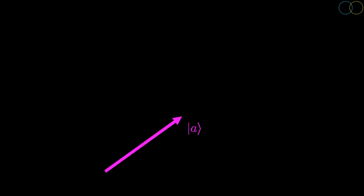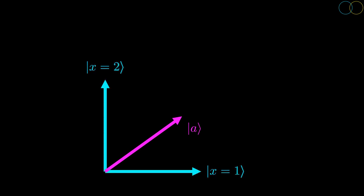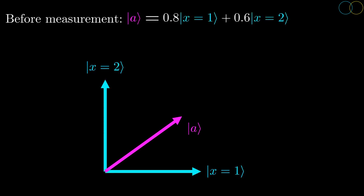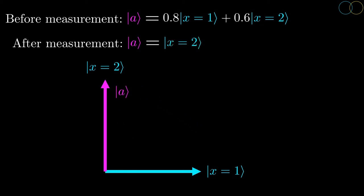Not only are the eigenvectors the only measurable states, but when we measure, the state changes to be the eigenvector measured. So by measuring a property of the system, we actually change the system. This is what's being referred to when people say that observing a particle changes the outcome of some experiment — by observing a particle, we necessarily change its state to be an eigenvector of whatever quantity we are observing.